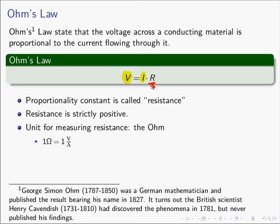The unit for measuring resistance has to relate the current to the voltage, so the proportionality constant has a unit of volts per amp. We call that the Ohm, to honor George Simon Ohm, who is credited with discovering Ohm's Law. In reality, Henry Cavendish actually discovered it before Ohm, but Cavendish didn't publish those findings and his work wasn't discovered until long after he died. The proportionality constant in Ohm's Law is called resistance, and it's measured in Ohms.